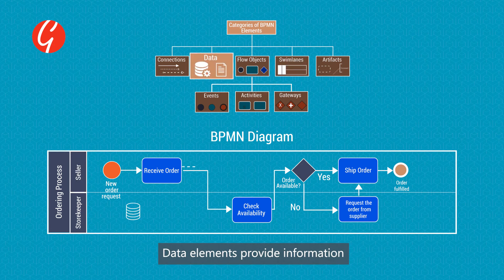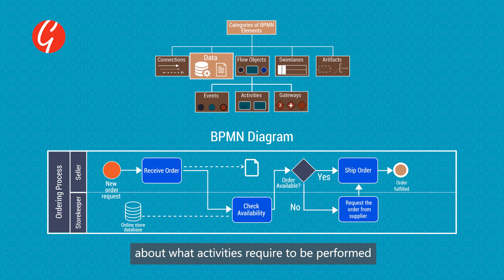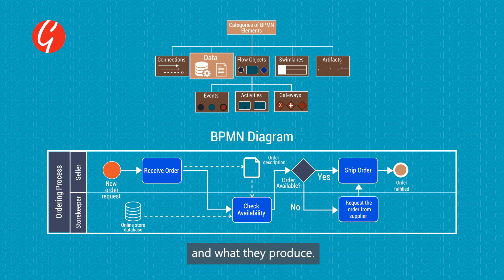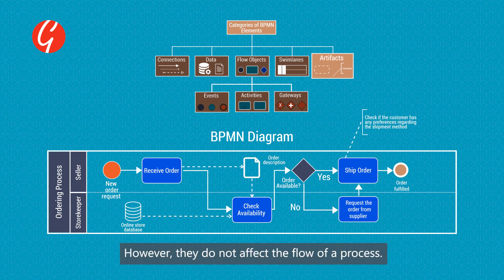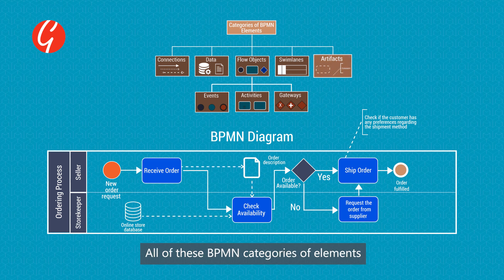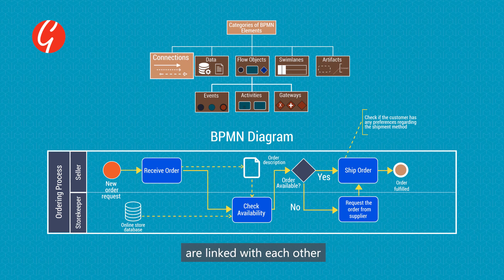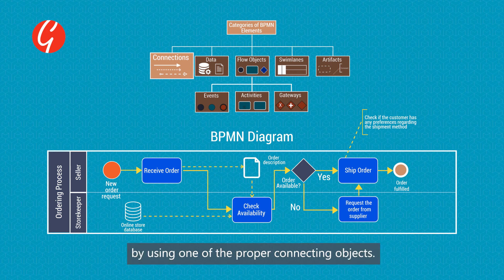Data elements provide information about what activities require to be performed and what they produce. Artifacts, such as comments, are used to provide additional information about processes; however, they don't affect the flow of a process. All of these BPMN categories of elements are linked with each other by using one of the proper connecting objects.